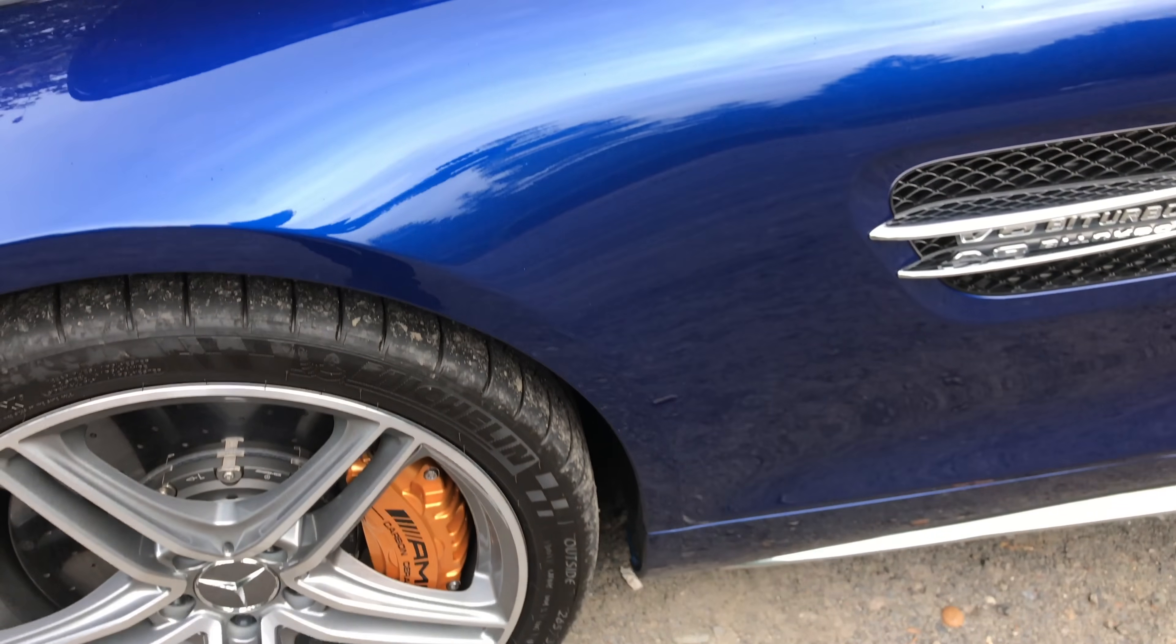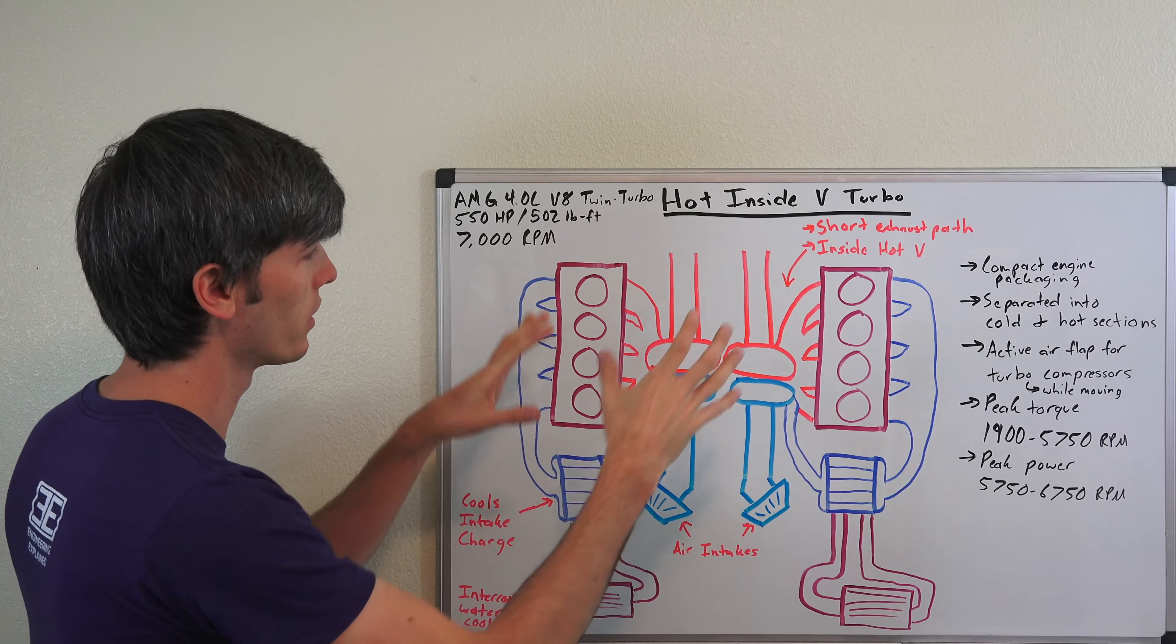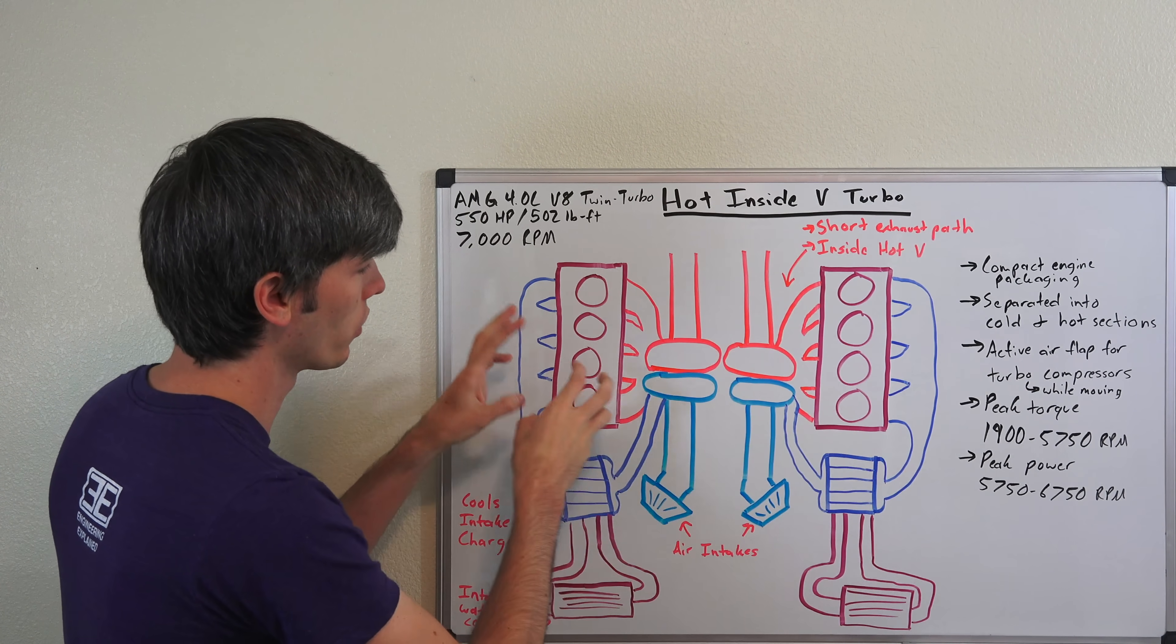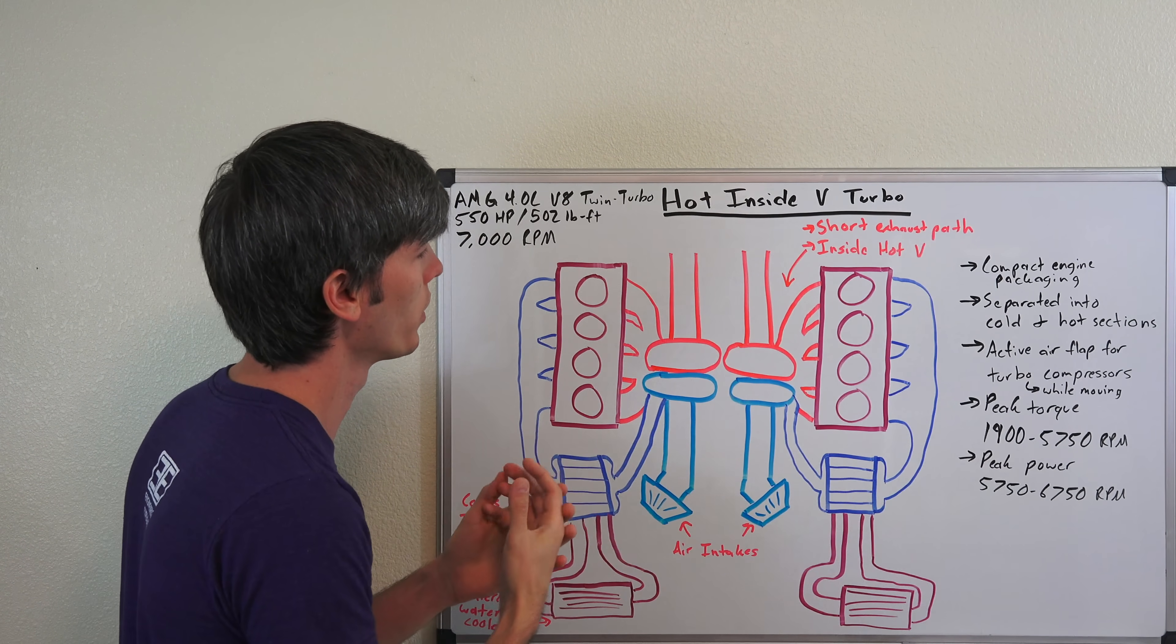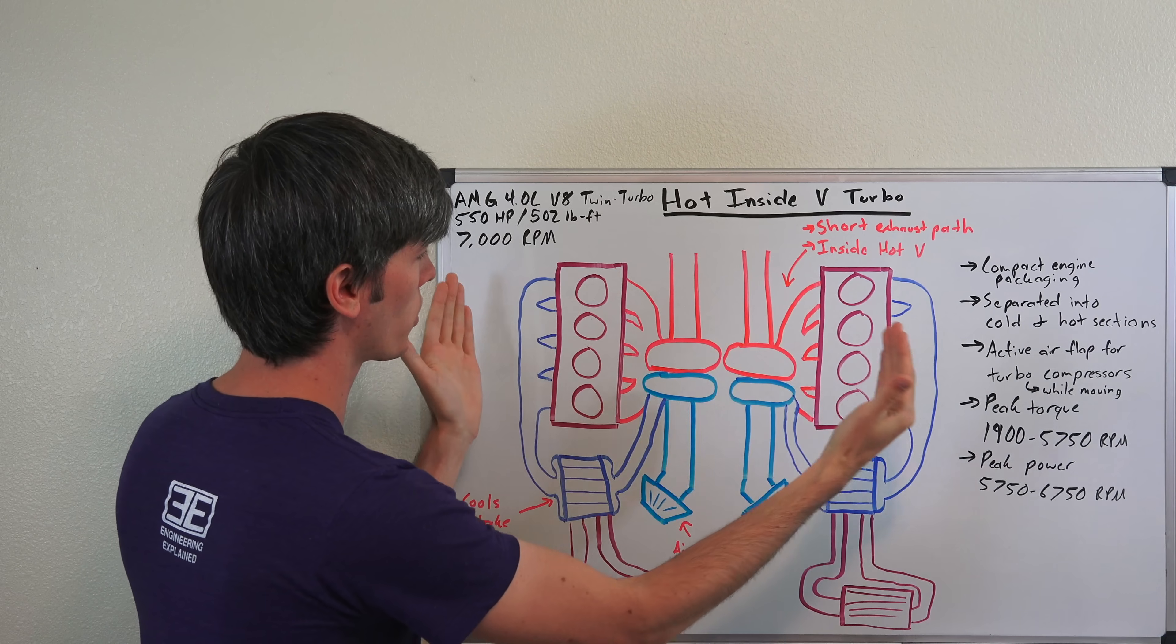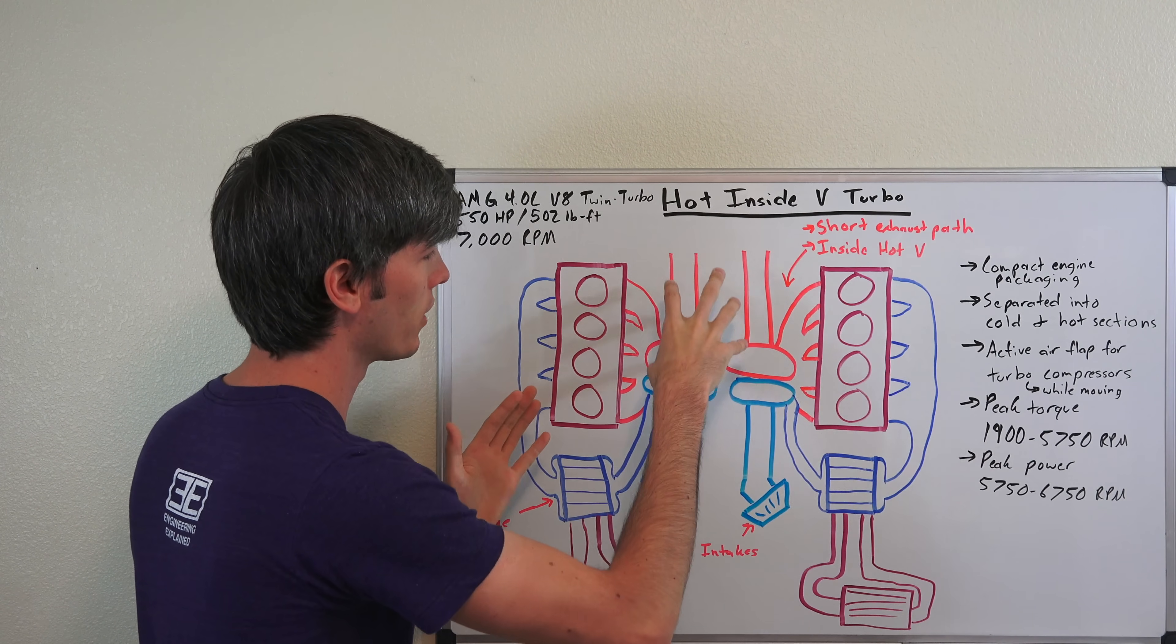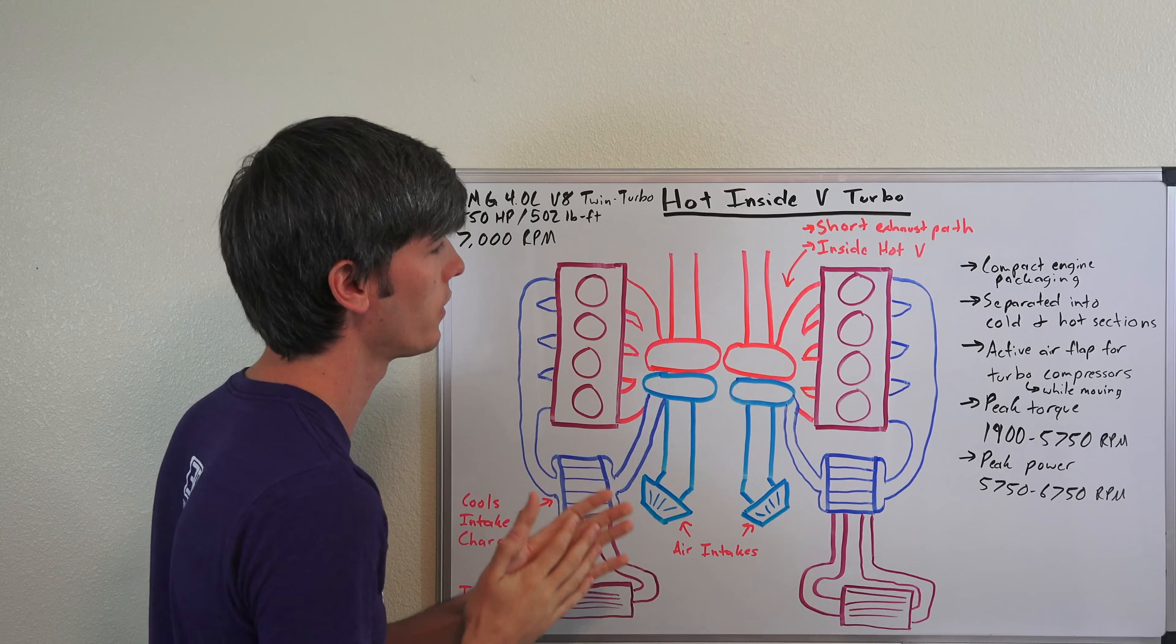Another thing you'll notice, and I've drawn the colors specifically for this, is that you've really divided the engine up into a hot section and a cold section. In blue here everything is basically cool and then in hot here everything is warm. You've got an advantage there because you're separating it. Versus if you were to take these turbochargers and put them on the outside, then you've got your intake all up on top so you have that hot portion inside the V which is heating up your intake.